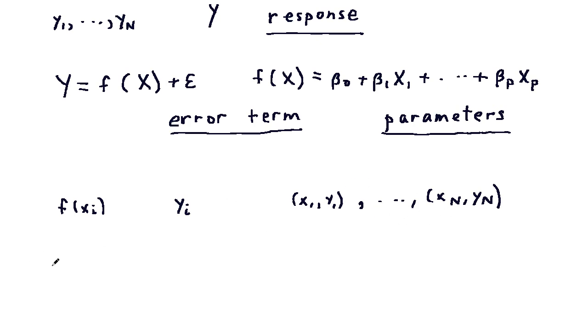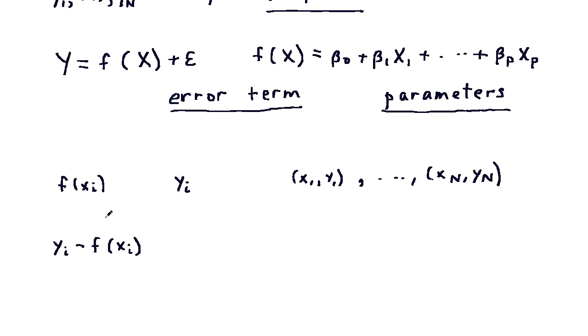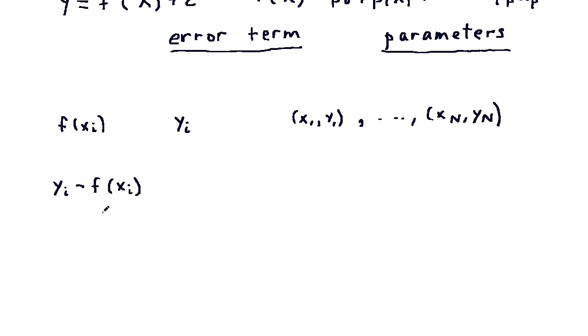So we have y sub i minus f of xi as the difference. We then square this and take the sum for i equals 1 through n.